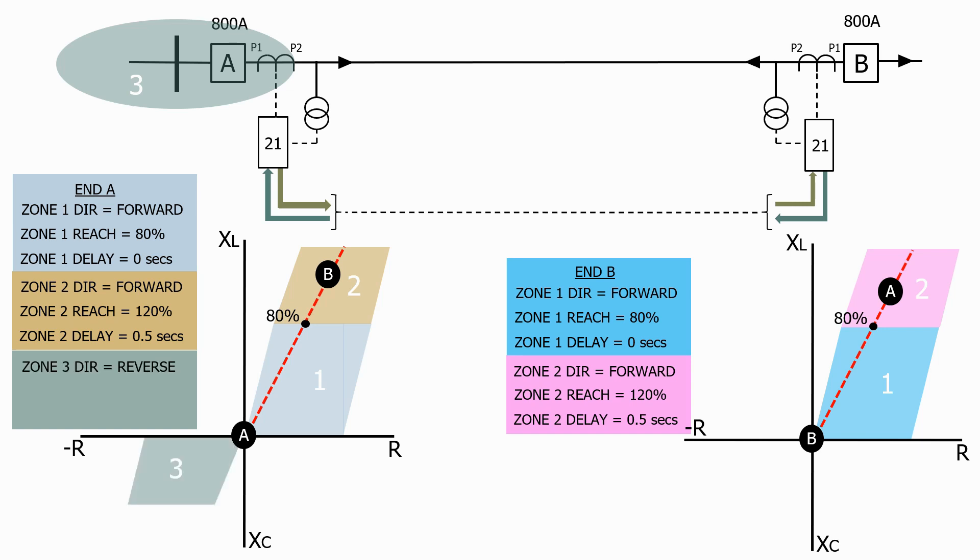As we can see, this zone appears in the third quadrant. With the reach we don't want to look too far into the next feeder, so let's make it 25% of the feeder length between A and B.